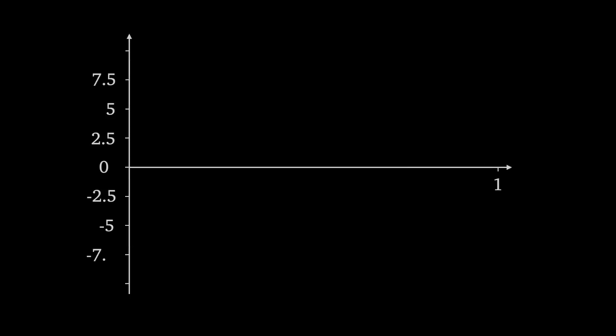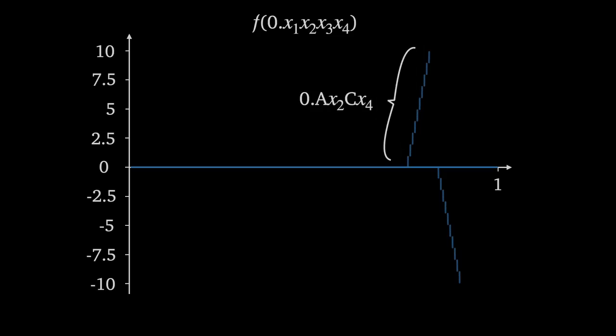Plotting the function for all numbers between 0 and 1 to 4 decimal places, we see firstly that most, unsurprisingly, are neither type A nor type B, and so mapped to 0. We then have a sequence of type A numbers of the form 0.A, x2, C, x4, where x2 and x4 take values 0 through 9, and a similar sequence of type B numbers straight after.